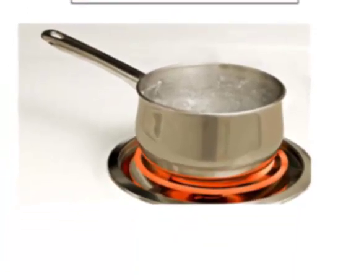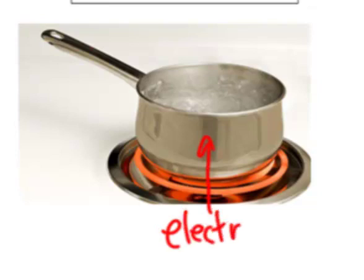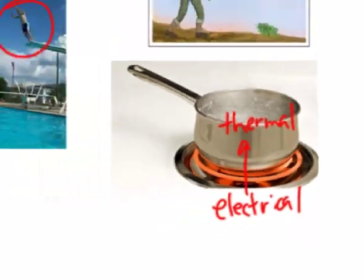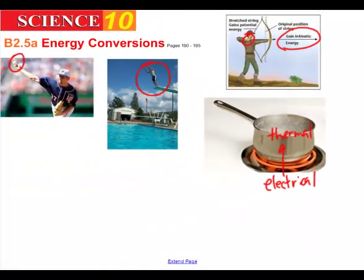On a stove top, we see an example where the electrical energy used in the element is being converted into thermal energy, or heat energy, in the boiling of the water.